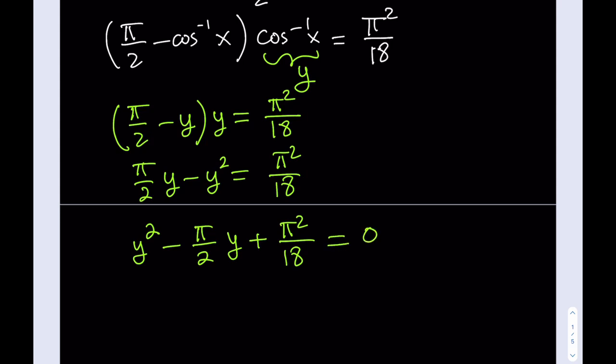Beautiful. Now we do have a quadratic and we can solve it because there is a formula. Unfortunately there's no formula for the quintic and above, but there's one for the cubic — you don't want to know — and one for the quartic, which is also complicated. But the quadratic formula is nice, relatively. However, we don't even need it because this equation is factorable.